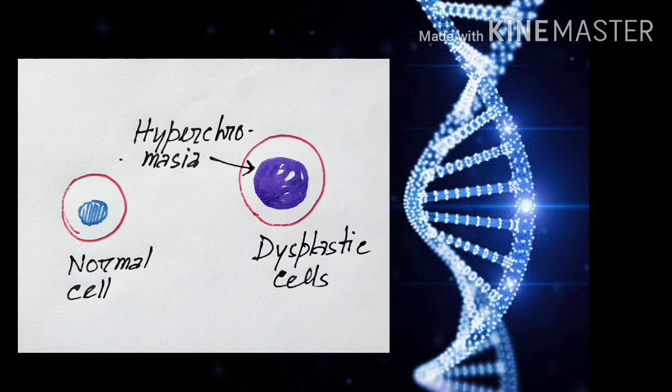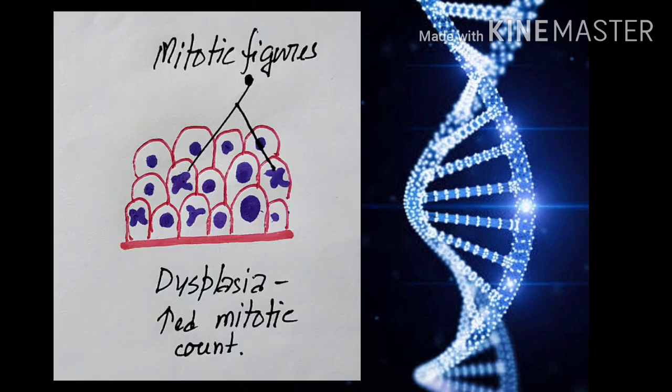The next feature is increased mitotic activity. That means the mitotic count is increased. Now what are the examples of dysplasia?